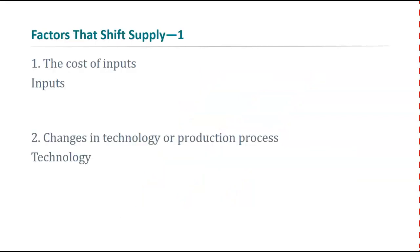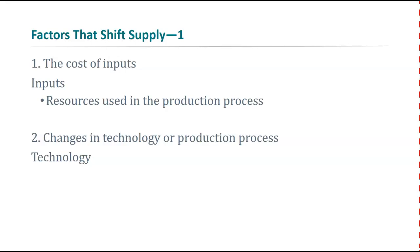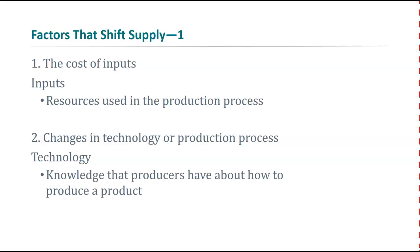Let's think about the factors that shift supply. First, the cost of inputs — the resources used in the production process. Colombian coffee beans are inputs for a coffee shop; peanuts are inputs for Snickers bars. If the cost of peanuts goes up, the number of Snickers bars you can supply goes down. Second, changes in technology or production processes. If you get a new way to brew coffee that takes half the time, new technology increases your ability to supply things to the market at the same price.